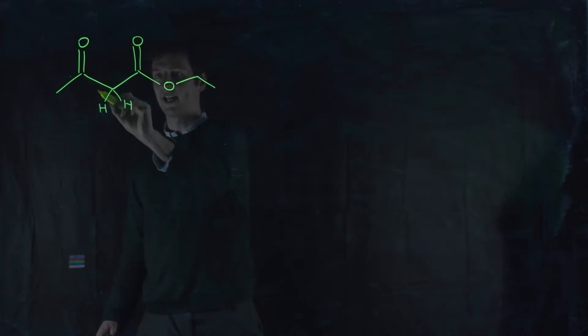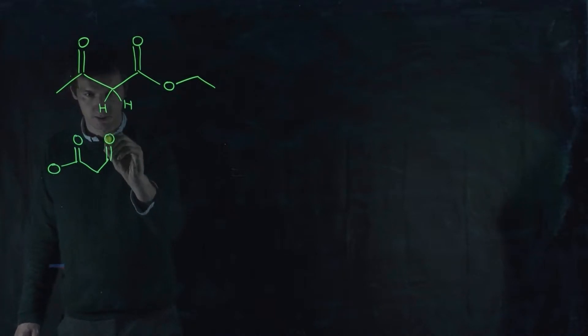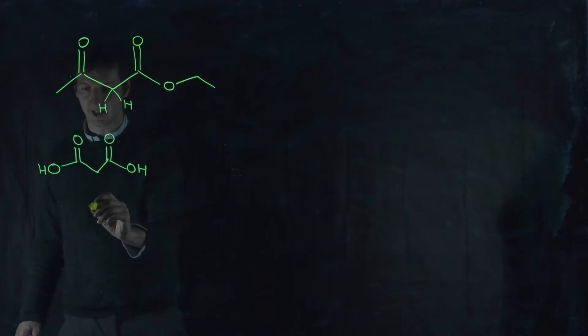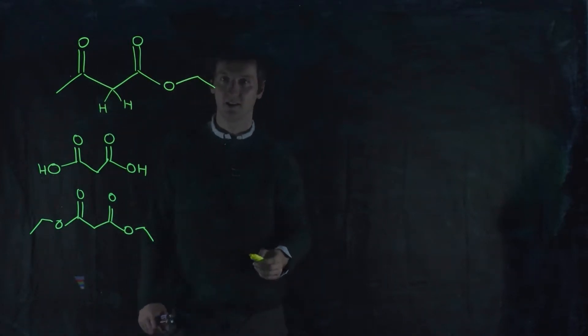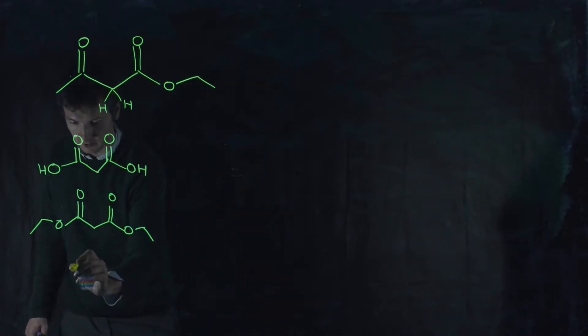And there are other examples of beta-dicarbonyls that you can have a look at. This could be a nitrile, it could be CN, or it could be a symmetric molecule called diethyl malonate. So, malonic acid would be this molecule here. And if you make the diester of that, then you get diethyl malonate. Obviously, the acid is going to deprotonate before we ever deprotonate the carbon, so this won't react in the same way, but the ester will react in the same way. Or, as I was saying, you can replace one side with a nitrile and get similar reactivity.